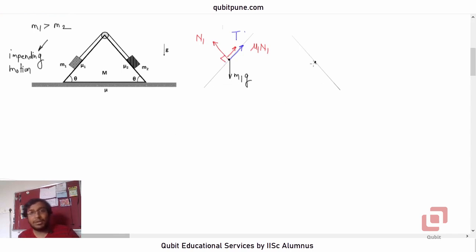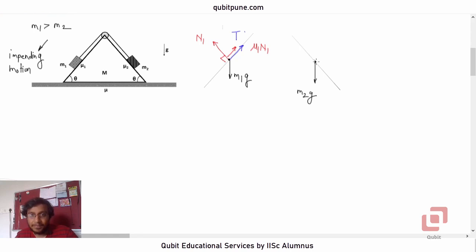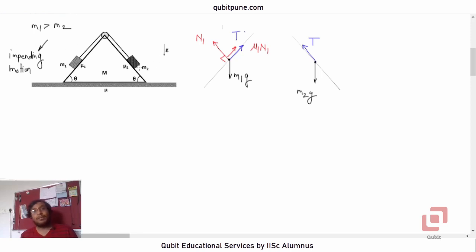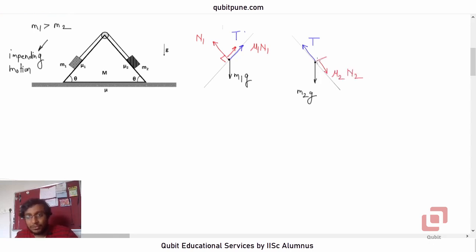Similarly, we can draw the free body diagram of m2. The weight m2g acts downward. The tension T acts up the incline — and since the pulley is frictionless, T is the same for both masses. The impending motion for m2 is upwards, so the frictional force acting on m2 will be downwards along the incline with magnitude mu2 n2, where n2 is the normal reaction. That completes the free body diagrams of masses m1 and m2.